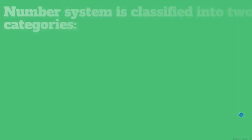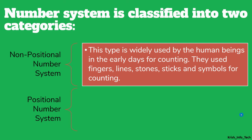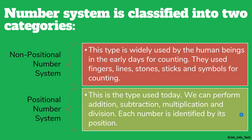Next, we are moving on to the types of numbers. Numbers are classified into two categories: non-positional number system and positional number system. In the non-positional number system, used in early days by human beings, they used fingers, pebbles, stones, and sticks for counting. For example, to know how many goats they have, they would keep the same number of stones and compare pebbles to goats each day. That is what is called a non-positional number system.